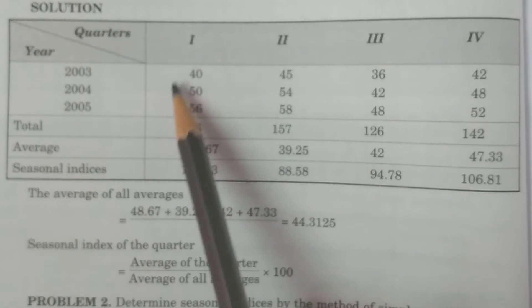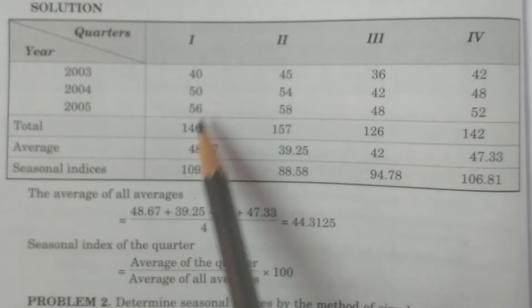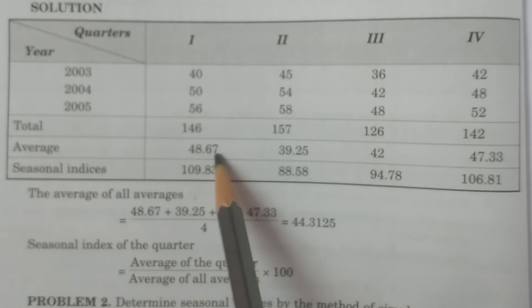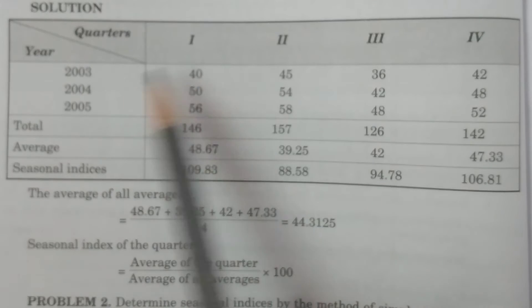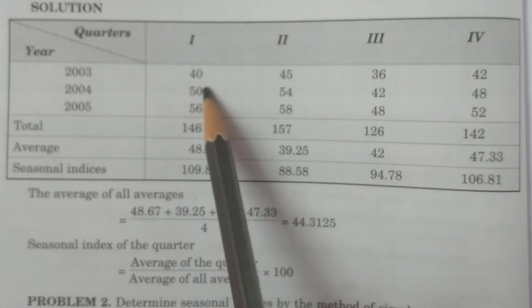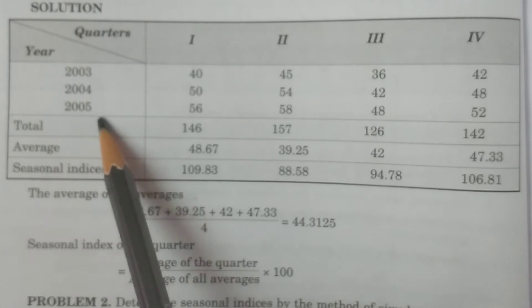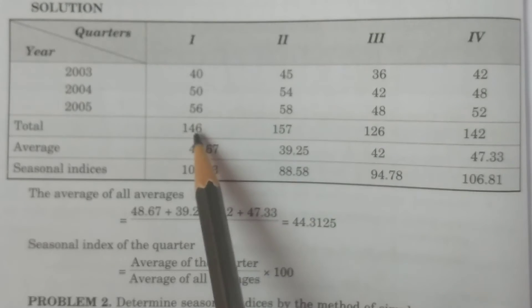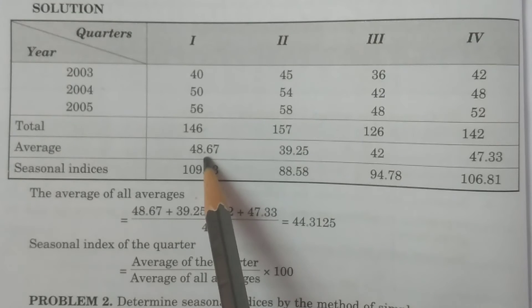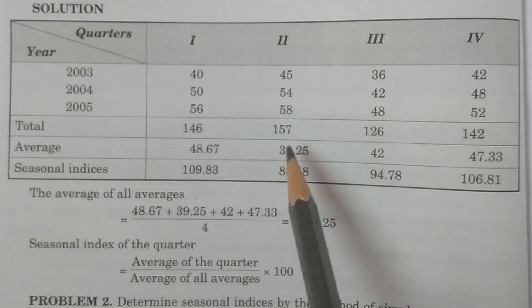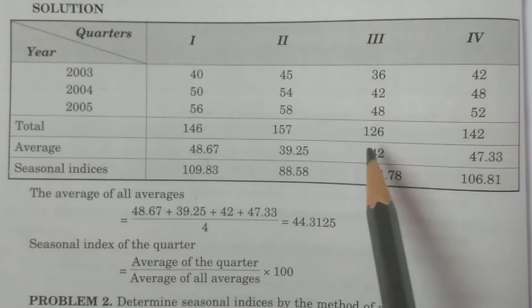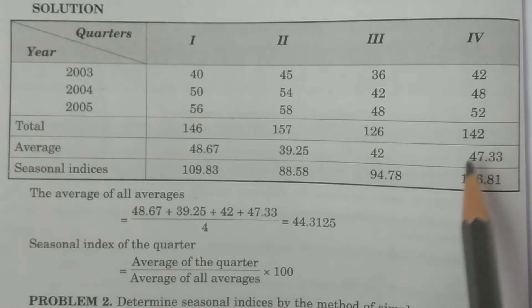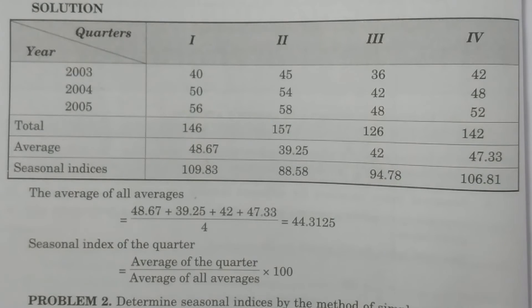We arrange the data quarter-wise and year-wise. For the first quarter across all years — say 2003, 2004, 2005 — the values might be 40, 50, 56. You add these and divide by three (three years) to get the average: 48.67.